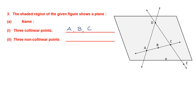Three non-collinear points — non-collinear means points that don't lie on the same straight line. So I can say A, D, C or A, D, B or A, B, E — any three which are not on the same straight line. For example, A and D as two points, and C, B, or E as the third.